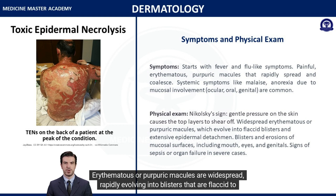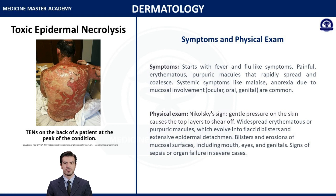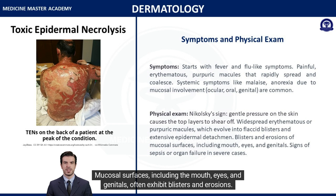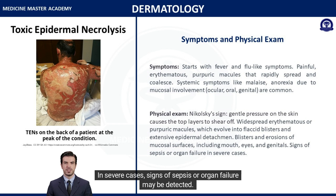Erythematous or purpuric macules are widespread, rapidly evolving into flaccid blisters due to their shallow nature, eventually leading to extensive detachment of the skin. Mucosal surfaces, including the mouth, eyes, and genitals, often exhibit blisters and erosions. In severe cases, signs of sepsis or organ failure may be detected.